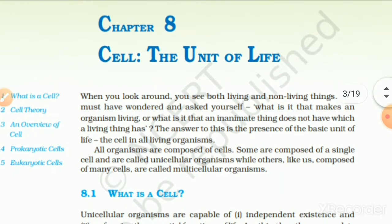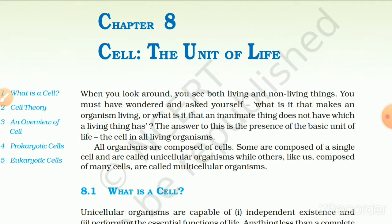Chapter 8: Cell, The Unit of Life. When you look around, you see both living and non-living things. You must have wondered what it is that makes an organism living, or what is it that a living thing has which an inanimate thing does not. The answer is the presence of the basic unit of life — the cell — in all living organisms. All organisms are composed of cells; some are composed of a single cell and are called unicellular organisms, while others, like us, are composed of many cells and are called multicellular organisms.